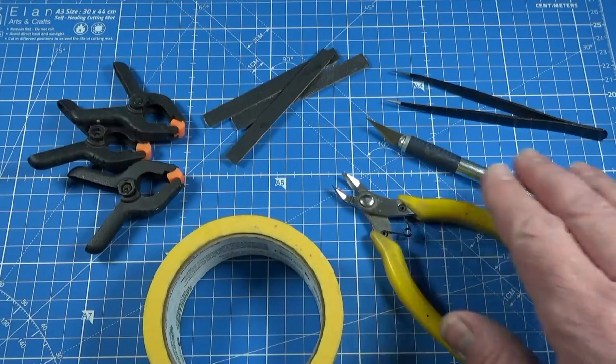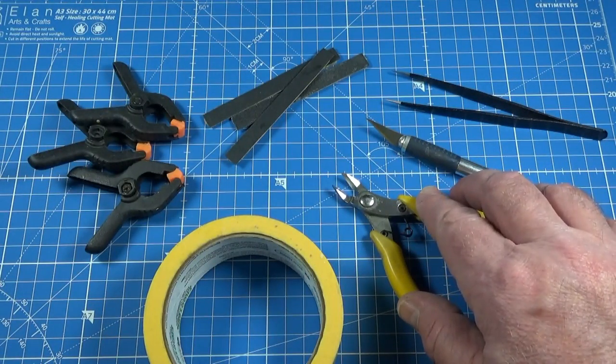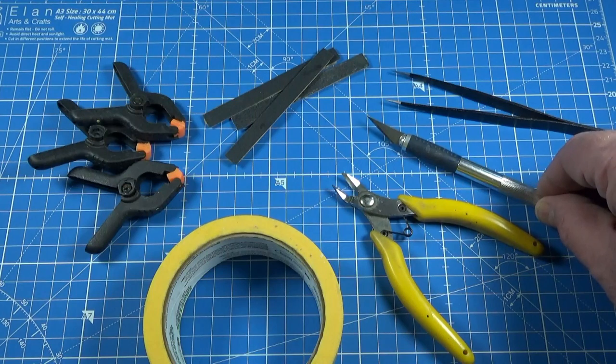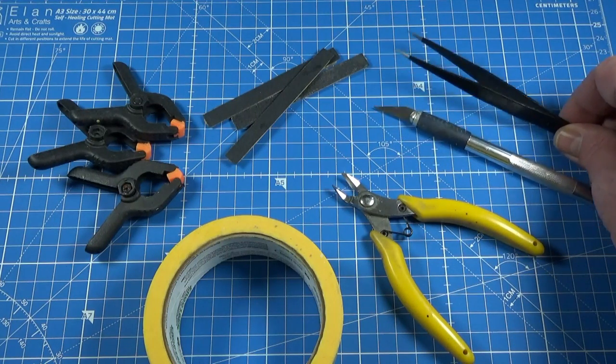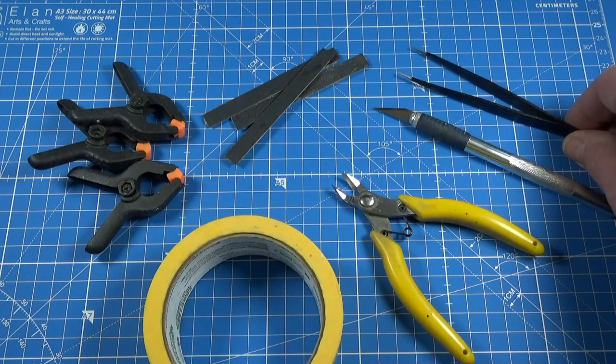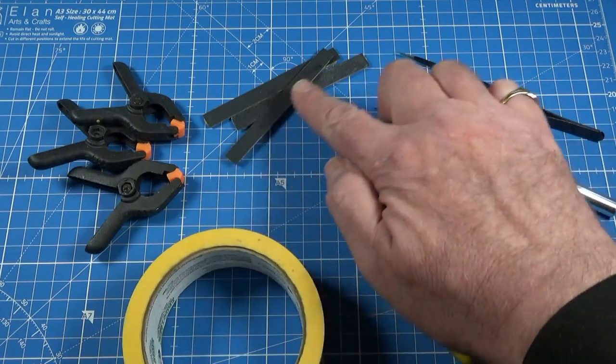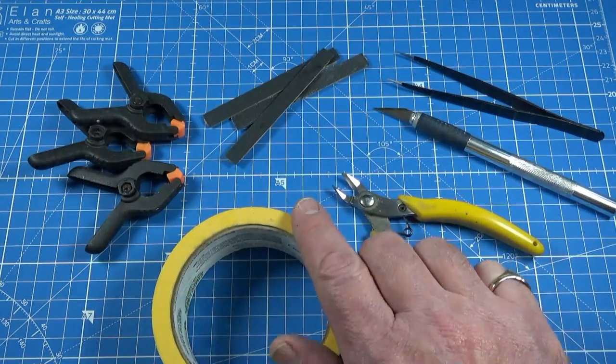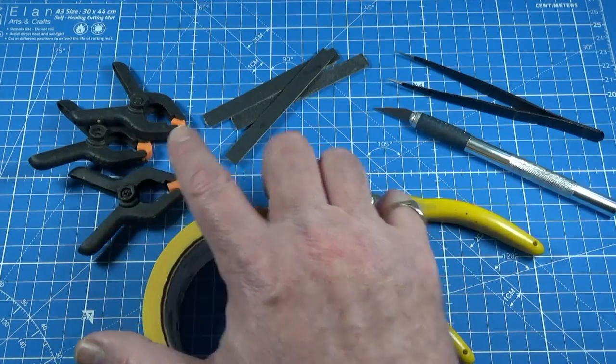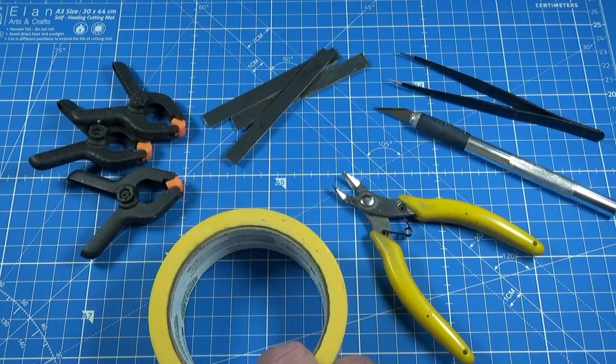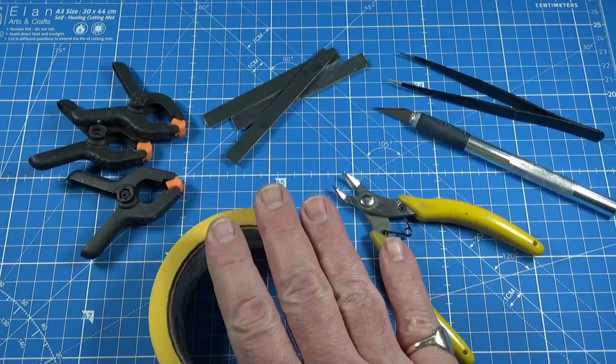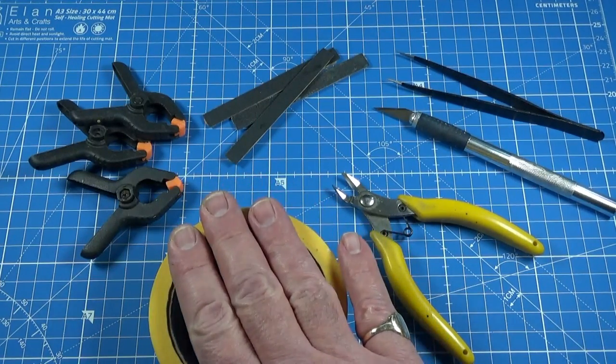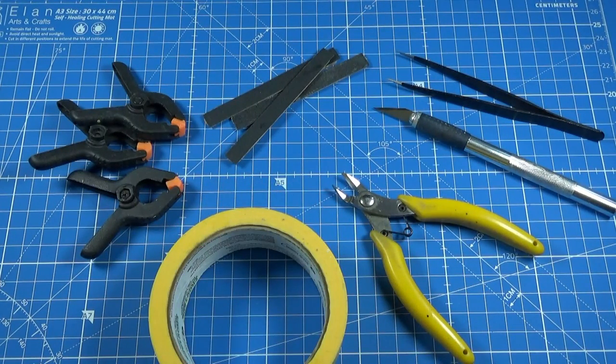For pretty much every build I use side snips to take parts off the frames, a craft knife to help clean them up, tweezers for handling the smaller parts, sanding sticks, I make my own but you can use things like emery boards, nail files as well, some clamps or you can use just regular clothes pegs if you want, and some masking tape and if you're using regular masking tape, make sure it's a low tack variety for delicate surfaces.